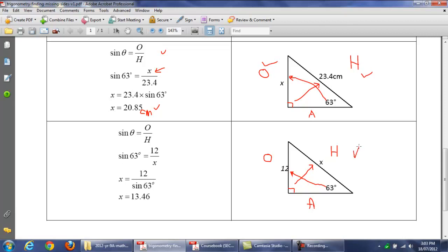We have to find H. We've been given O. Which one is it? Well, it's the sine and we put it in. Sine theta is equal to O over H. Put in the angle. Sine 63 is equal to 12, O is 12. H is X.